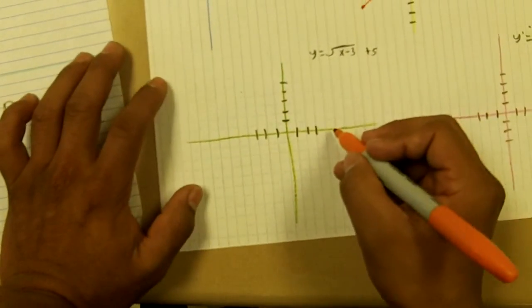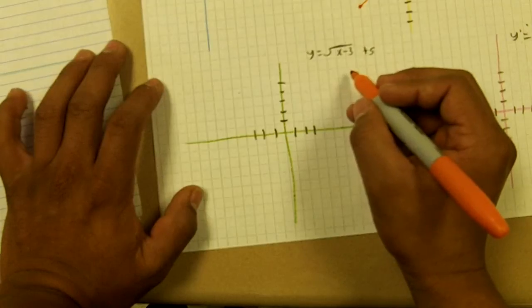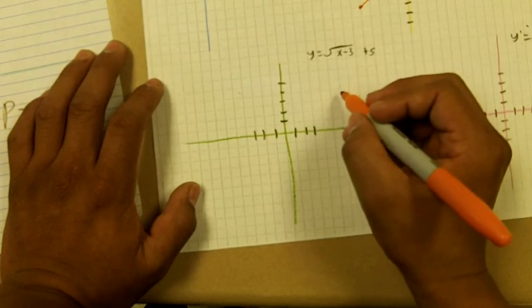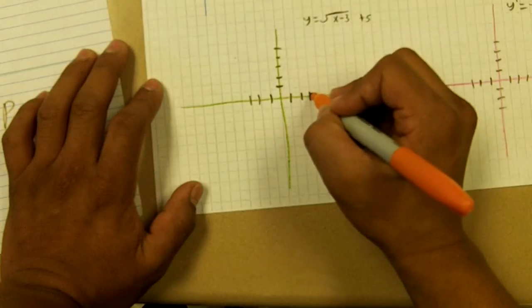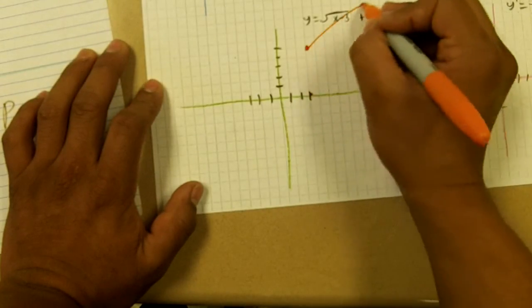And then for this one right here, we go to the right three, right here, and up five. So it's going to look something like this.